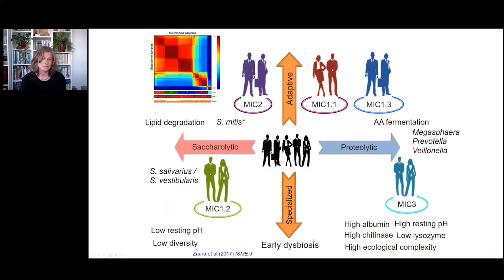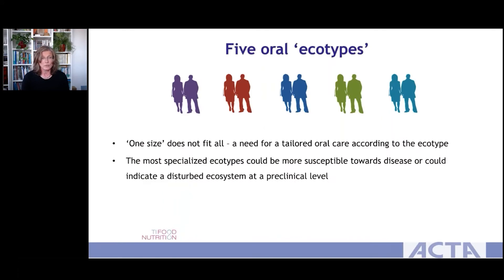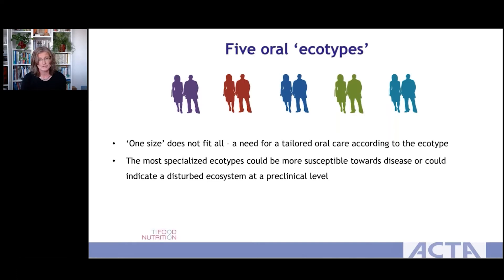This was a cross-sectional study so we cannot confirm this yet, but we think that the two groups at the bottom might be at an early stage of dysbiosis — really losing balance because they are too specialized — even though when we looked in their mouths they were still clinically healthy. We call these 'oral ecotypes.' We think that if this is true, even if we are clinically healthy, one size does not fit all — we will each need different oral care according to our ecological type. The most specialized ecotypes could be more susceptible to disease or indicate a disturbed ecosystem at a pre-clinical level.